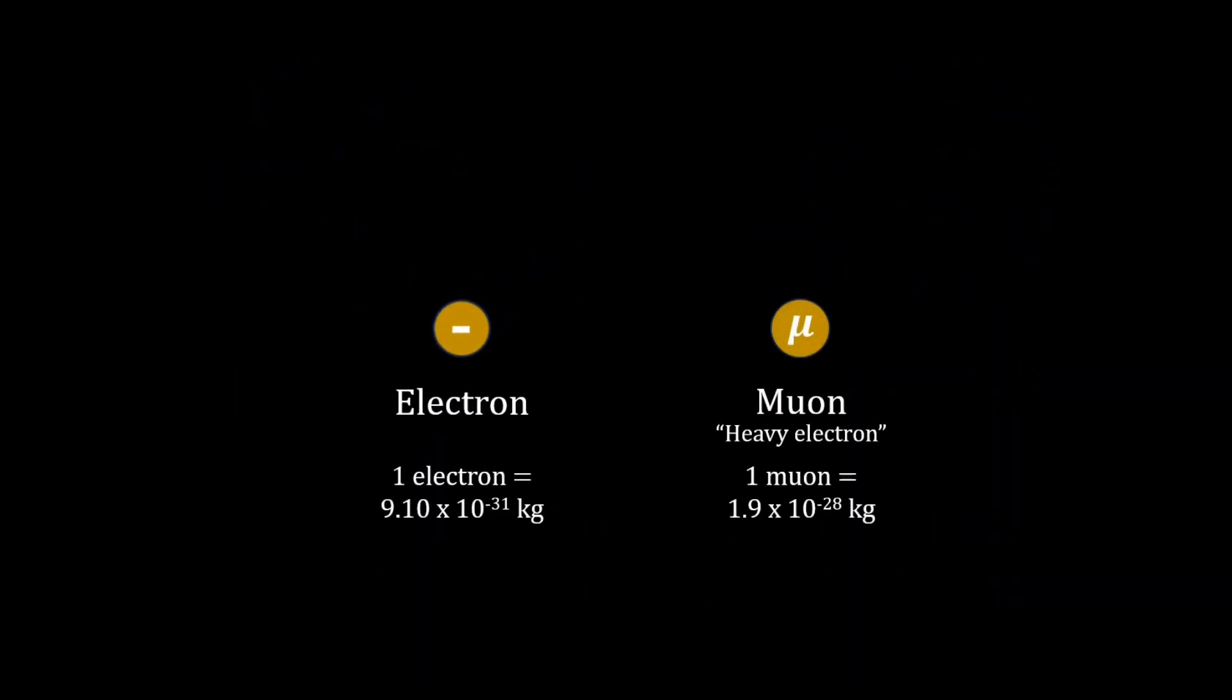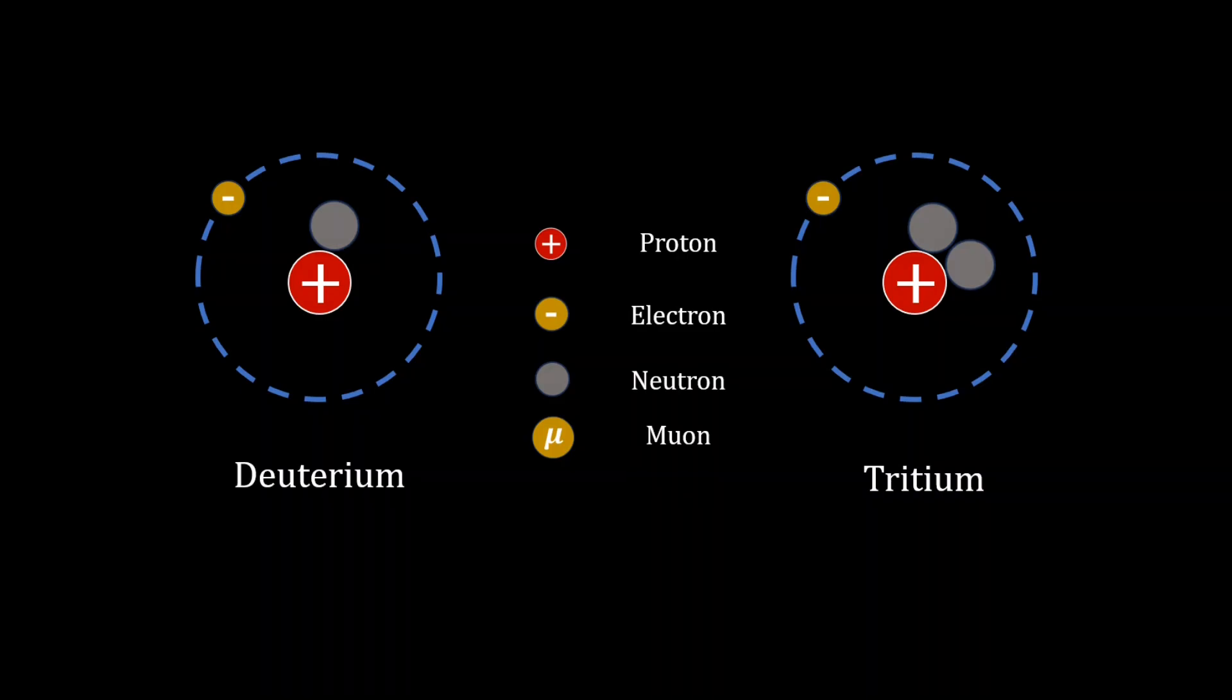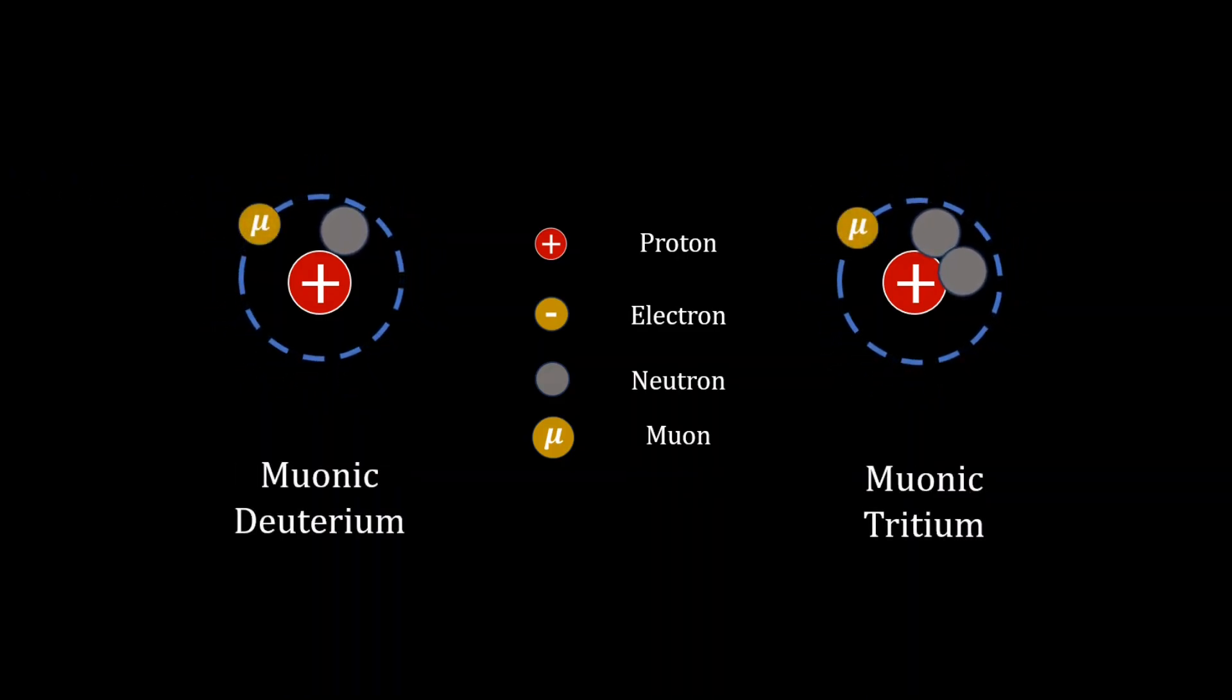Muons are subatomic particles 207 times heavier than the electron. The process involves replacing electrons in certain atoms with muons, forming muonic atoms.